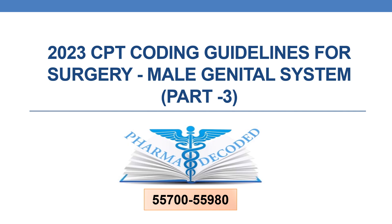Hello everyone. Now let us discuss 2023 CPT coding guidelines for surgery male genital system part 3. In the current session we will be discussing the CPTs in the range 55700 to 55980.